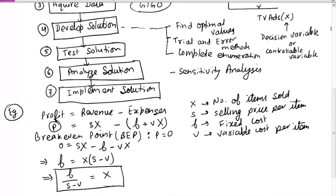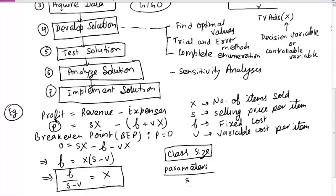So X = F / (S − V) is the break-even point — you need at least X items to break even, and anything more than that is profitable. As an example, consider university class size. If class size is too small, the class may run at a loss. To find the break-even number of students, we need the parameters S, F, and V. These are the parameters of the model — we need data on them before we can determine the break-even class size.